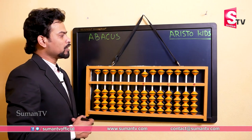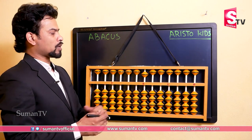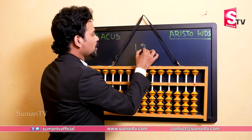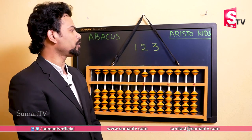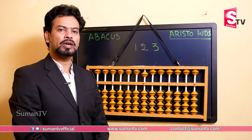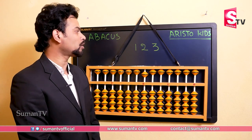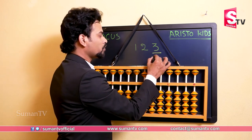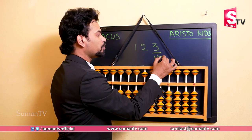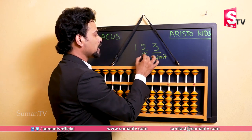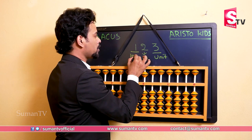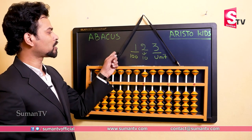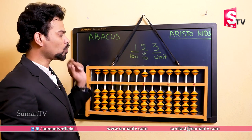Let me give you an example before coming to the working of abacus. Suppose I am writing here 123. If we want to know the place values of this number, 3 is in the 1's place or unit place, 2 is in the 10's place, and 1 is in the 100's place, and so on. It starts with units, 10's, 100's, 1000, 10,000, 1 lakh and so on.